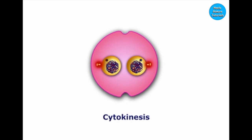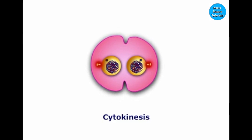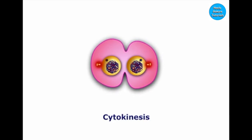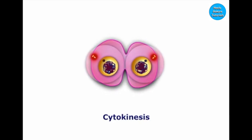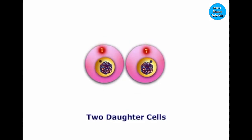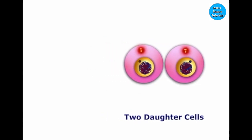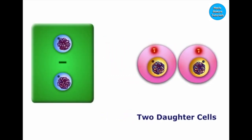By the end of telophase, cytokinesis starts. In animal cells, cytokinesis is marked by invaginations or constrictions of the plasma membrane, which deepen to form two daughter cells. In plant cells, a cell plate is formed in the middle of the cell, which grows towards the periphery, giving rise to two daughter cells.